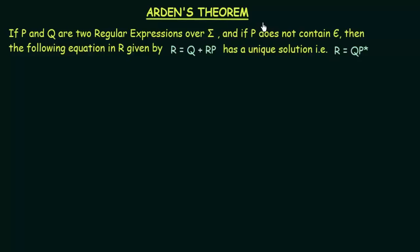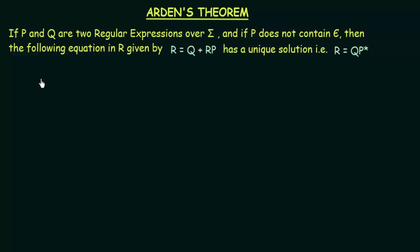In this lecture, what we will do is we will prove this. First we will prove that r = qp* is a solution to this equation, and after proving that, we will also prove that this is a unique solution — meaning this is the only solution to this equation. So let's get started.